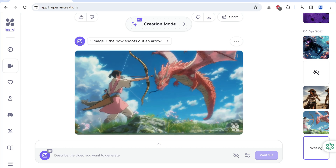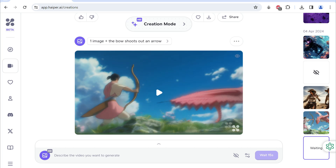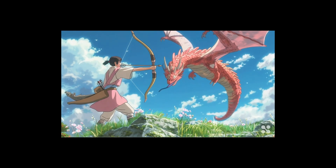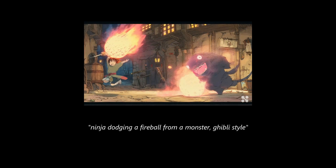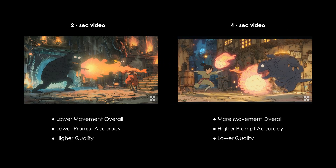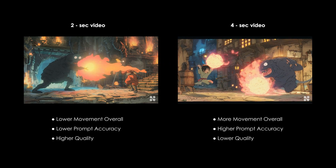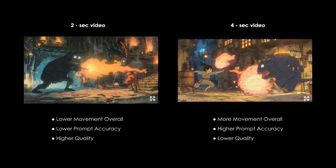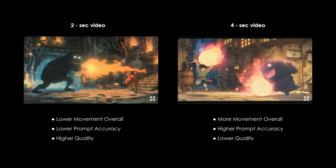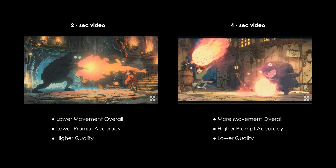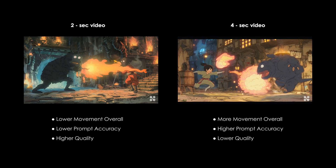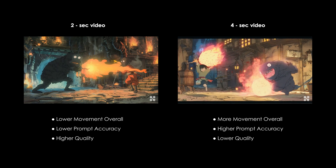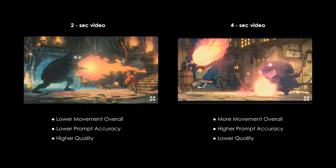Let's join both the videos to get this sequence. Here's another example of a ninja dodging a fireball in the same style, comparing the two-second and four-second video. The two-second video is more consistent but delivers less movement, while the four-second video is accurate to the prompt and contains more movement but may tamper with the consistency.